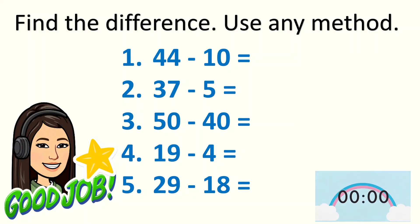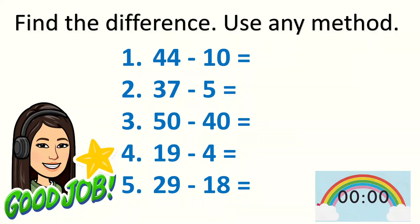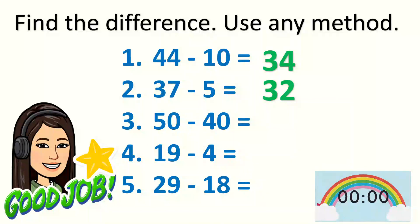Okay, time is up. Let's check. Number 1: 44 minus 10 is 34. 37 minus 5 — yes, it's 32. 50 minus 40 is 10. 19 minus 4 — yes, it's 15. And 29 minus 18 is 11. Very good, children!